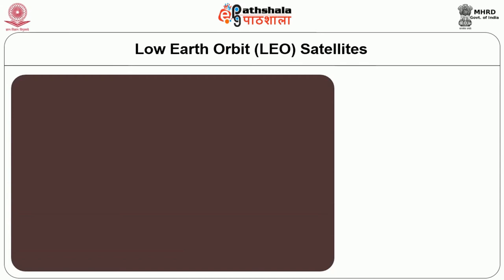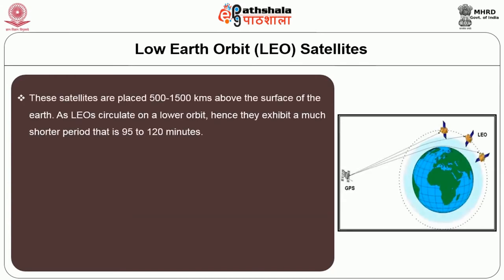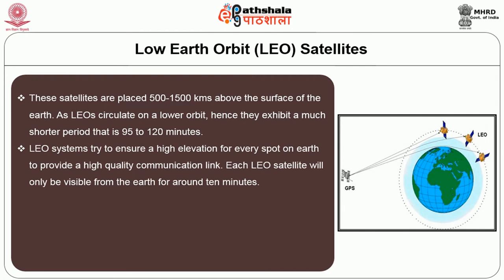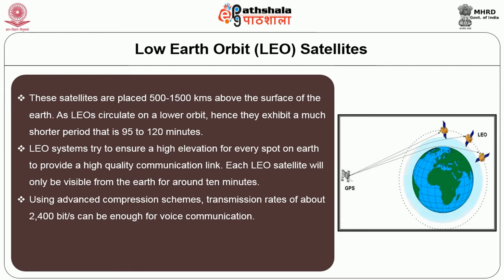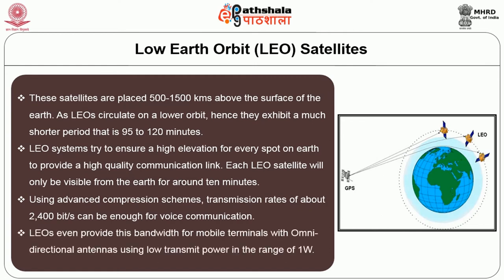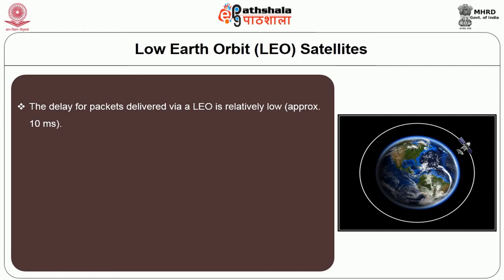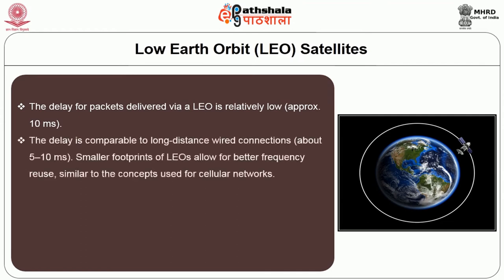The next type is Low Earth Orbit, called LEO satellites. These satellites are placed 500 to 1,500 km above the surface of earth. As LEO satellites circulate in lower orbit, they exhibit a much shorter period of 95 to 120 minutes. LEO systems try to ensure a high elevation for every spot on earth to provide a high quality communication link. Each LEO satellite will only be visible from the earth for around 10 minutes. Using advanced compression schemes, a transmission rate of about 2,400 bytes can be enough for voice communication. LEOs provide this bandwidth for mobile terminals with omnidirectional antennas using low transmit powers in the range of 1 watt. The delay of packets delivered via a LEO satellite is relatively low, comparable to a long-distance wired connection.